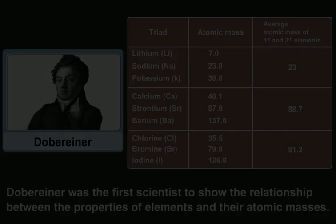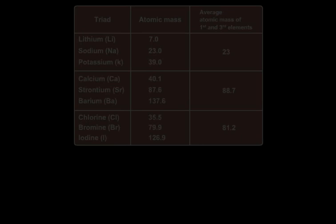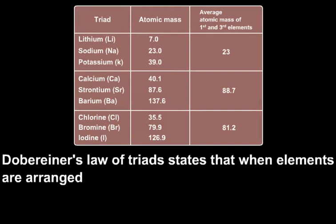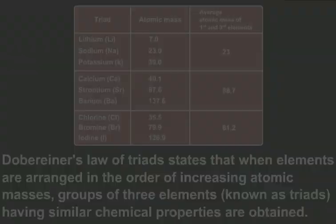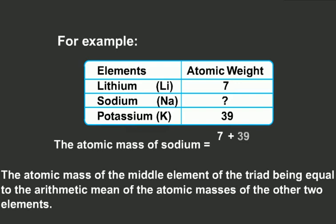Dobereiner's Law of Triads states that when elements are arranged in the order of increasing atomic masses, groups of three elements known as triads having similar chemical properties are obtained. The atomic mass of the middle element of the triad is equal to the arithmetic mean of the atomic masses of the other two elements.